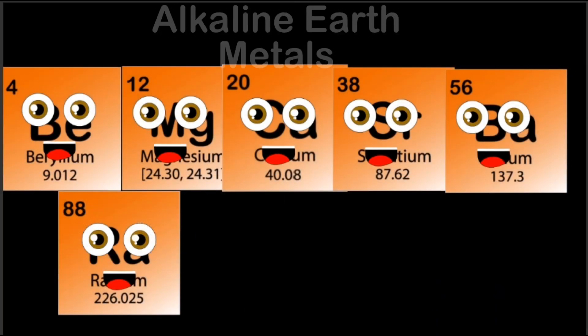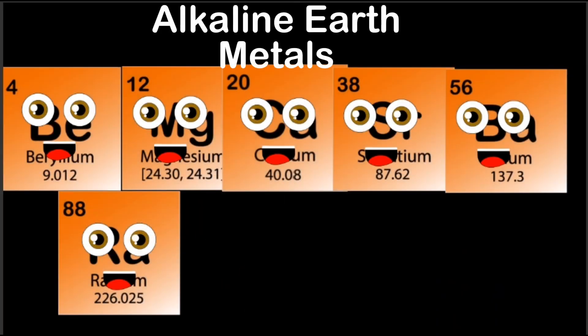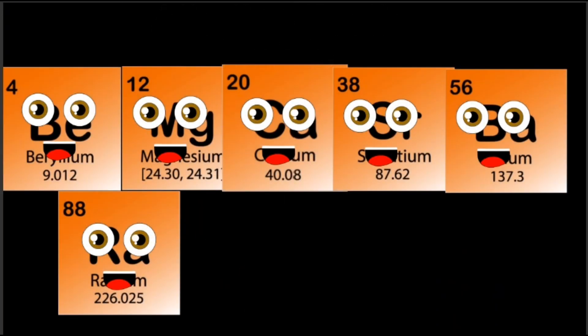We are the alkaline earth metals, we are in column two in the periodic table. There's six elements in our crew. To find the first element, you must go to column two, line up the second period. We will introduce ourselves to you.